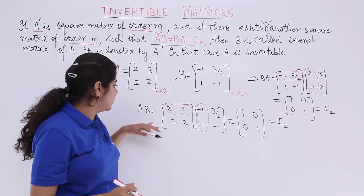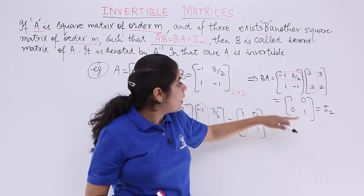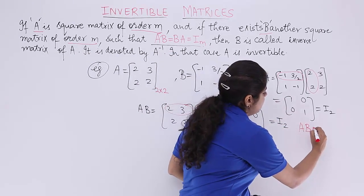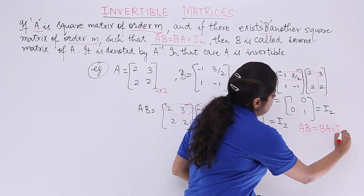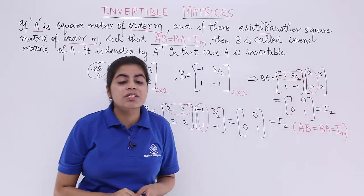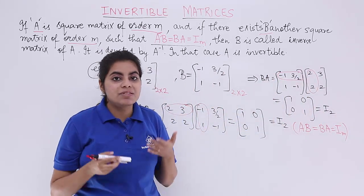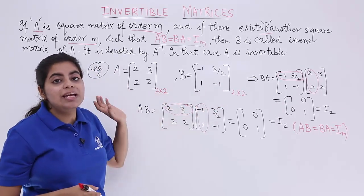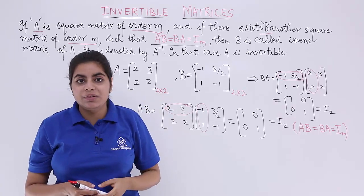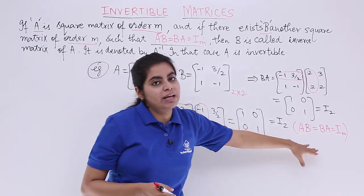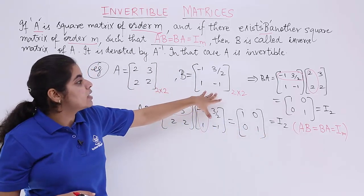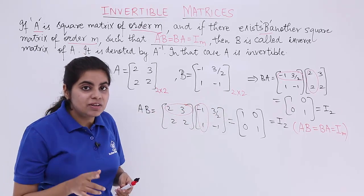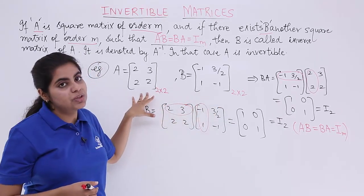Now, see the results again. AB is equal to I2. BA is equal to I2. That means we have got AB is equal to BA is equal to IM. And when we got this result, we know that we have some invertible matrices in front of us. That means A is the inverse of B and B is the inverse of A. So suppose you are asked to find out the inverse of A, you just check it. You find this condition happening. So yes, the inverse of A is B which is minus 1, 3 by 2, 1, minus 1. Similarly, the inverse of B is A which is 2, 3, 2, 2.